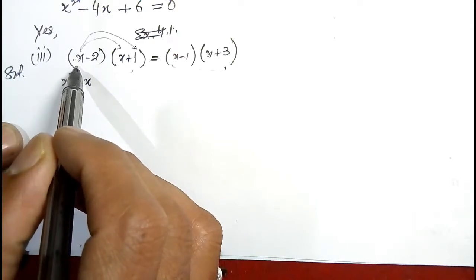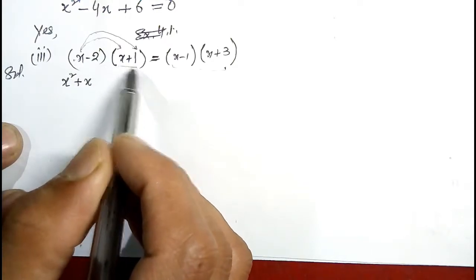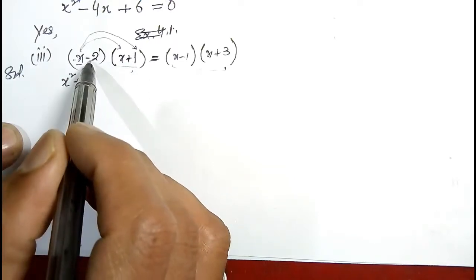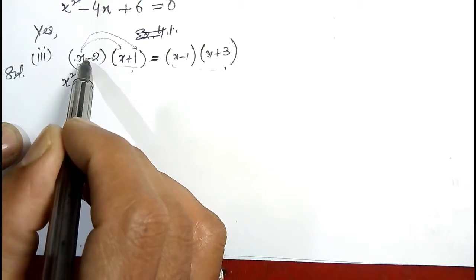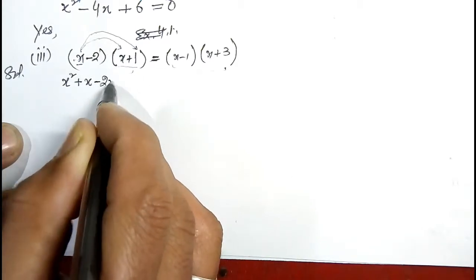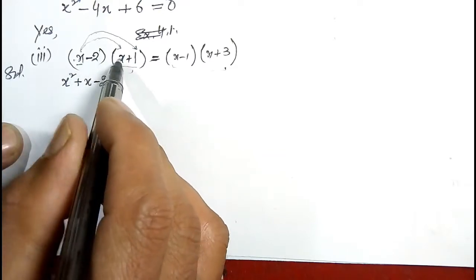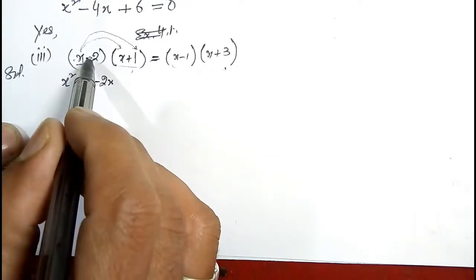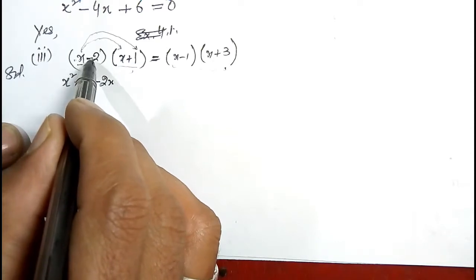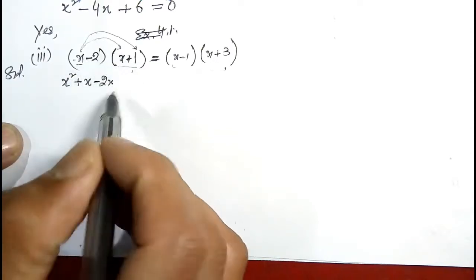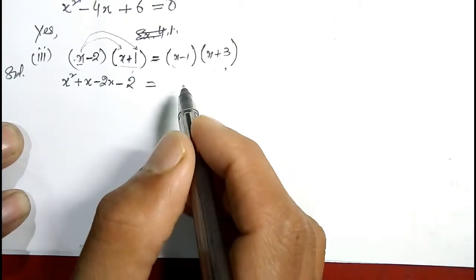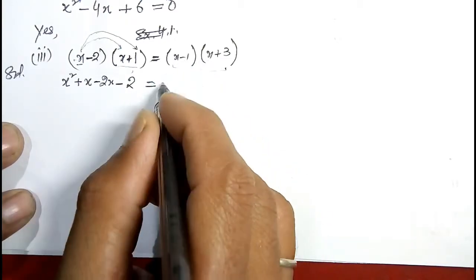Now I will multiply the two terms by minus 2. First I multiply minus 2 by x: since minus times plus gives minus, this becomes minus 2x. Now I multiply minus 2 by plus 1: minus times plus gives minus, and 2 times 1 gives 2, so this becomes minus 2.